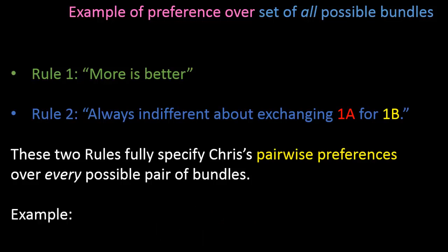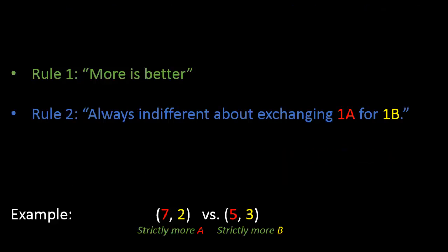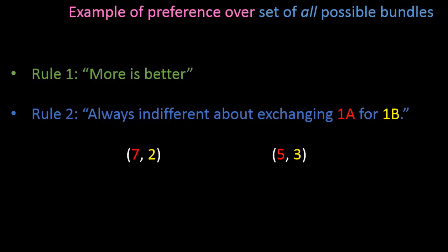Now let's look at a last, trickier example. The first bundle has 7 apples and 2 bananas; the second bundle has 5 apples and 3 bananas. Is one bundle strictly better, or is Chris indifferent? The first bundle has strictly more apples but the second bundle has strictly more bananas, so rule 1 alone cannot tell us. However, using rule 2, we can figure it out. I'll insert a middle bundle of 6 apples and 3 bananas. Going from the left bundle to the middle bundle means taking away one apple and giving one additional banana, so by rule 2, Chris is indifferent between the left and middle bundles.